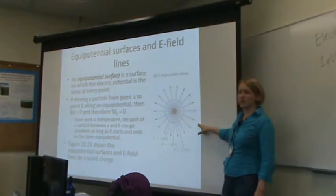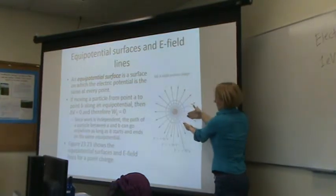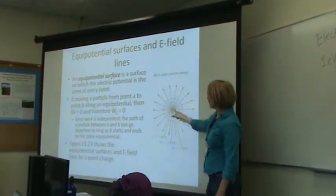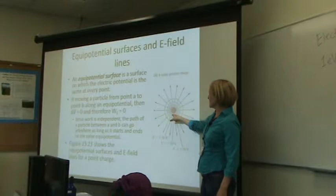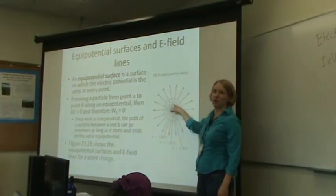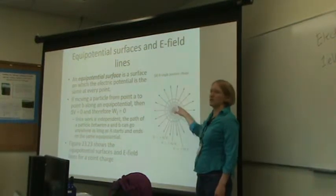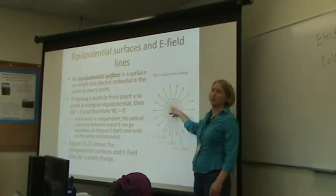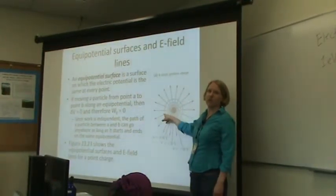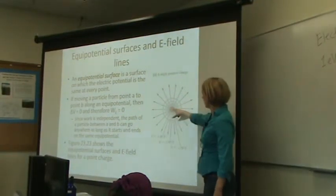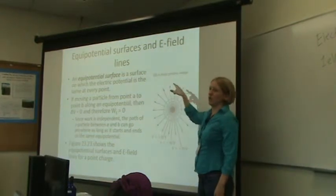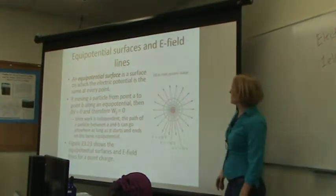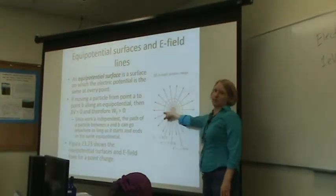The electric field decreases with distance. As these electric field lines separate, the electric field is going smaller and smaller. So if we were to draw a line where the electric field is the same around this charge, it would have to be a circle — everywhere along that circle, the electric field has the same value. That's called the equipotential surface. The potential is also constant along that line.